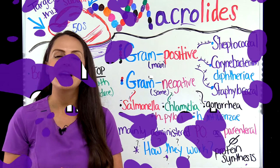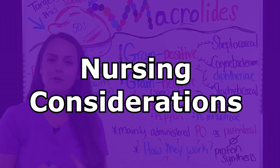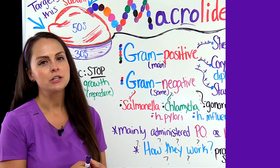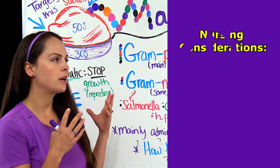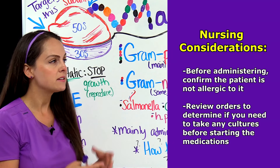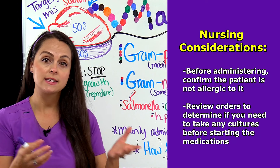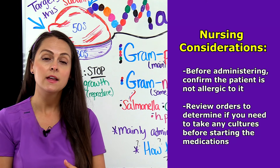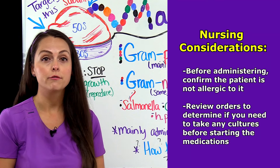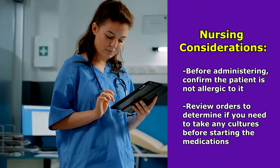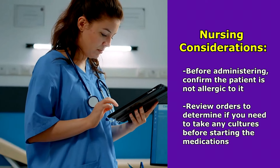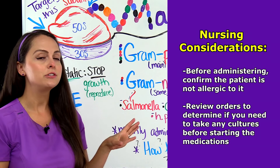Now let's talk about our role as a nurse when administering these medications. Before administration, you want to confirm that your patient isn't allergic to these medications. Sometimes when a patient is allergic to penicillin, the macrolides may be a safer alternative for them. Also look over your orders and make sure you don't need to collect any cultures before starting the medication.